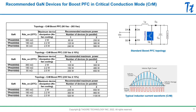We start with the critical mode boost topology, which is very common at low power levels. The schematics are shown here, and the typical waveforms for the inductor and switch are shown here. The main thing to remember is that the inductor current comes back to zero every switching cycle, so it is variable frequency but zero voltage turn-on.